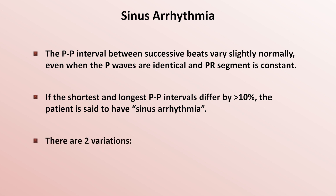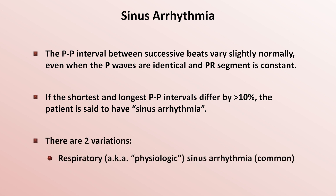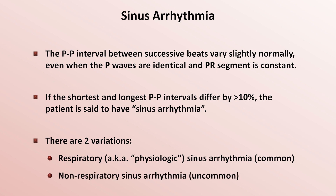There are two variations. First is the most common respiratory sinus arrhythmia, sometimes called physiologic sinus arrhythmia, in which the p-to-p interval varies based upon the patient's respiratory cycle. The less common variation is called non-respiratory sinus arrhythmia, in which there is no relationship to the respiratory cycle.